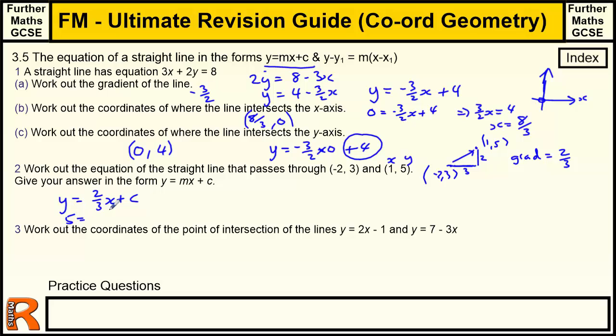So 5 equals 2 thirds times 1, which is just 2 thirds, plus c. So c must be 4 and 1 third. If we take away 2 thirds from 5, we get 4 and 1 third. So y equals 2 thirds x plus 4 and 1 third.